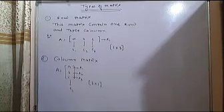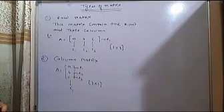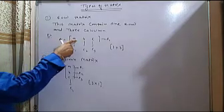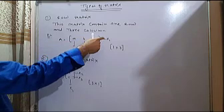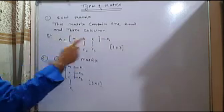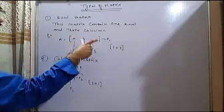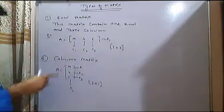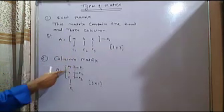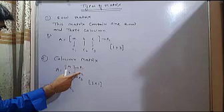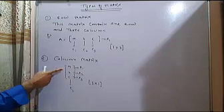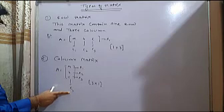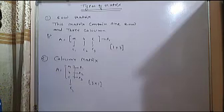Now we see the types of matrix. The first type is the row matrix. In a row matrix, it contains one and only one row. For example, A, B, C — this is one row with three columns. When the matrix contains one row and three columns, it is called a row matrix. Similarly, in a column matrix, there is one and only one column. Here, three rows — R1, R2, R3 — and one column. So this is called a column matrix.